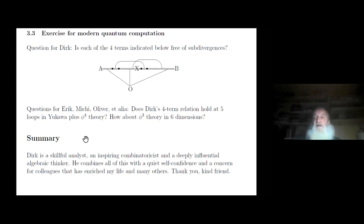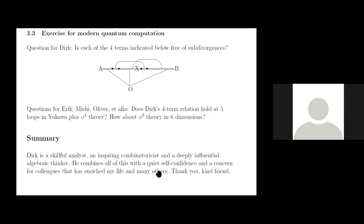So here's a question for Dirk. Last night I drew this diagram, Dirk, and I hope that it's free of subdivergences. Can you disprove Dirk Kreimer's claim that this should satisfy a four-term relation? Was Dirk right or wrong? And I come to my summary. Dirk is a skillful analyst, an inspiring combinatoricist, and a deeply influential algebraic thinker. But more than all of that, he combines these gifts with a quiet self-confidence and a great concern for colleagues. This has enriched my life and many others. So thank you, Dirk. Thanks, David.